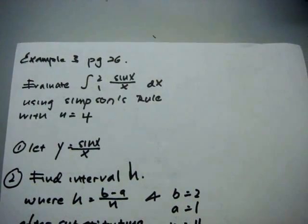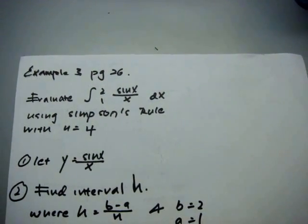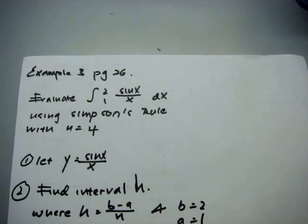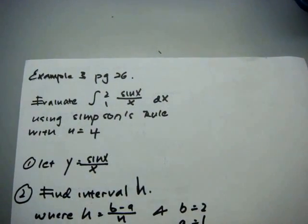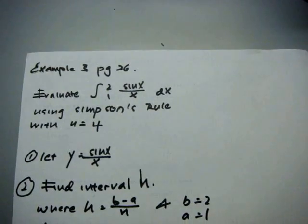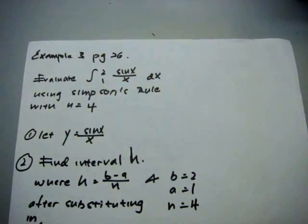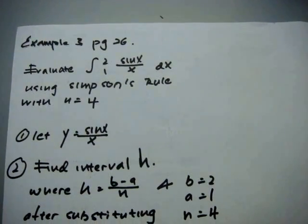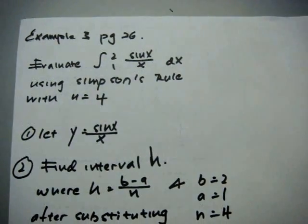Example 3 of page 26: Evaluate sin x over x dx, integrating from 1 to 2, using Simpson's rule with n equals to 4. First, let y equals to sin x over x.